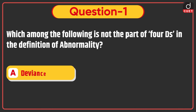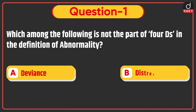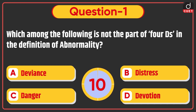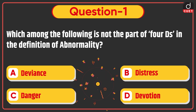Now let's begin today's session. First question: which among the following is not part of the 4 Ds in the definition of abnormality? Deviance, distress, danger, or devotion? The correct answer is option D: devotion.